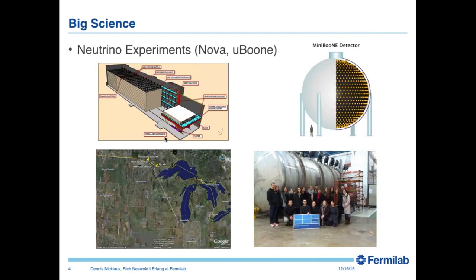One of the particle types we work with is neutrinos. We generate neutrinos with our particle beams here, then send them through the earth to our detectors up in northern Minnesota. This is a diagram of one of our NOVA detectors — about the size of a barn. We also have on-site detectors: mini boone and micro boone. Neutrinos won the Nobel Prize in physics this year, so it's a very exciting field.